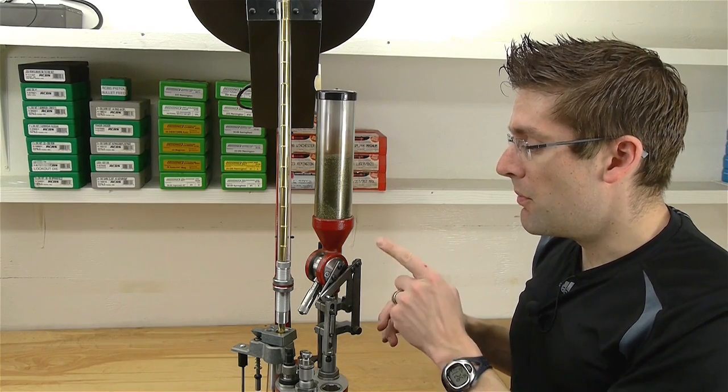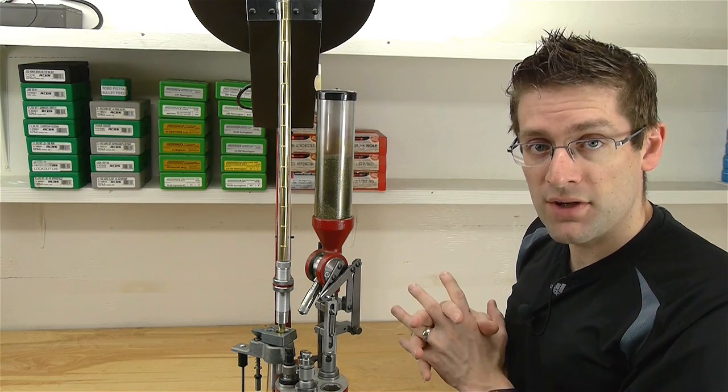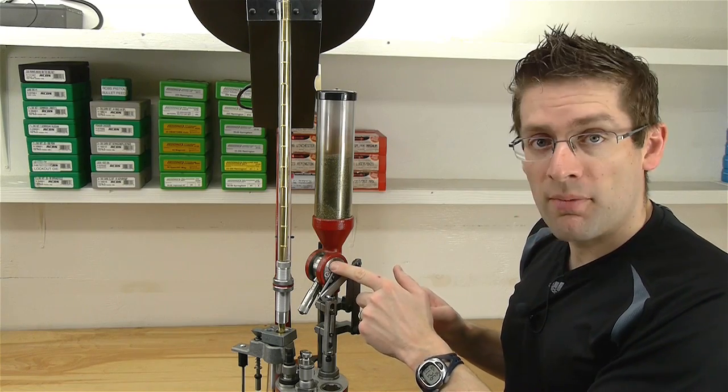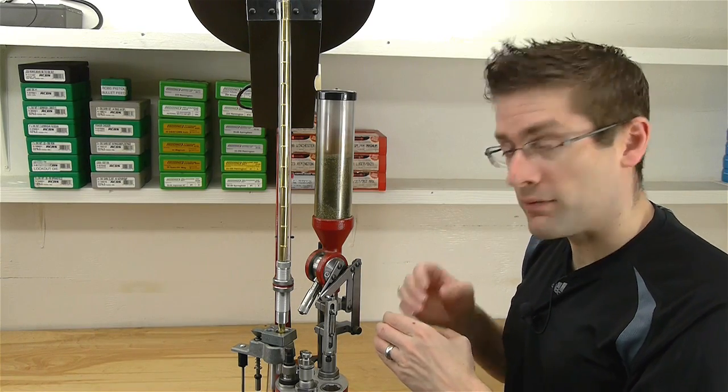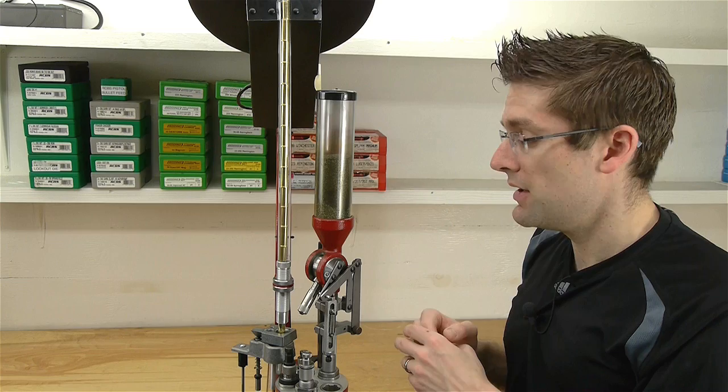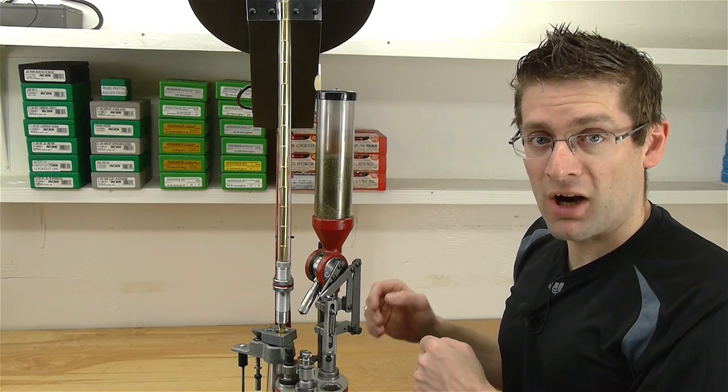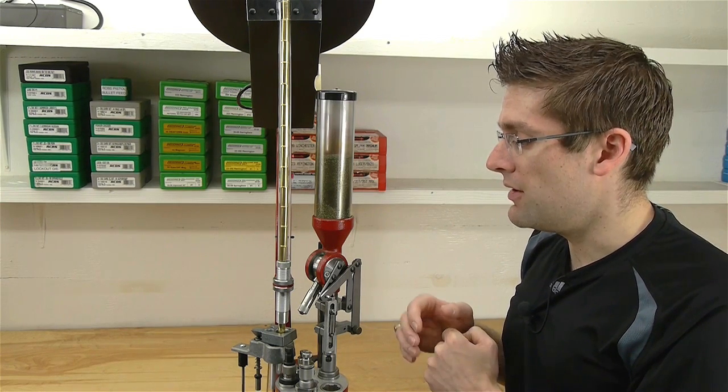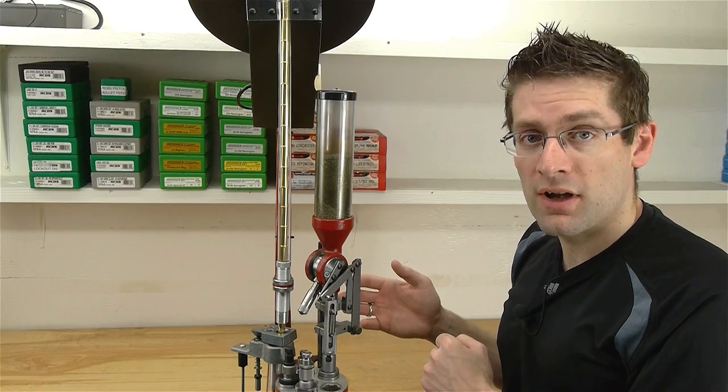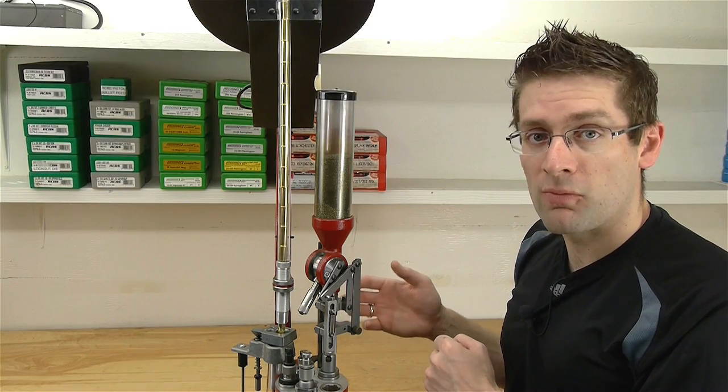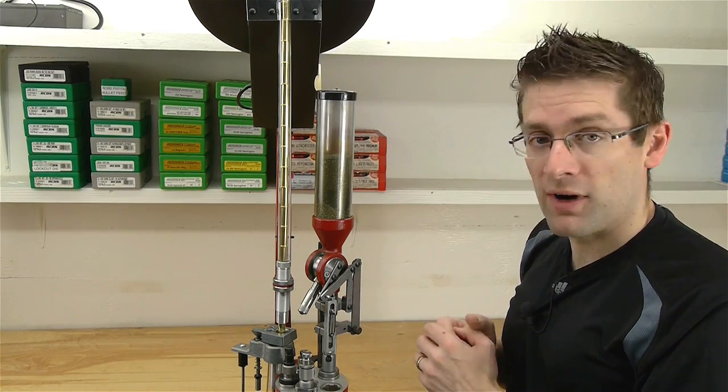There are multiple drums that come with the press. You've got a pistol drum and a rifle drum. And these have different diameter bores so that you can get really consistent charge weights for pistol. And you can load large charge weights for your rifle cartridges.